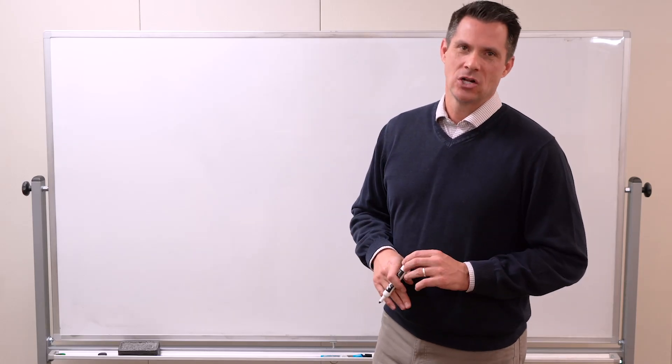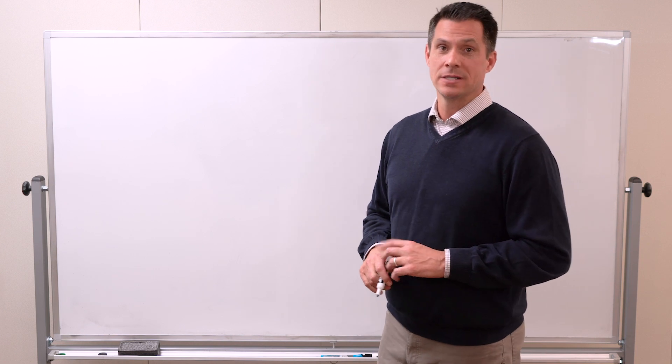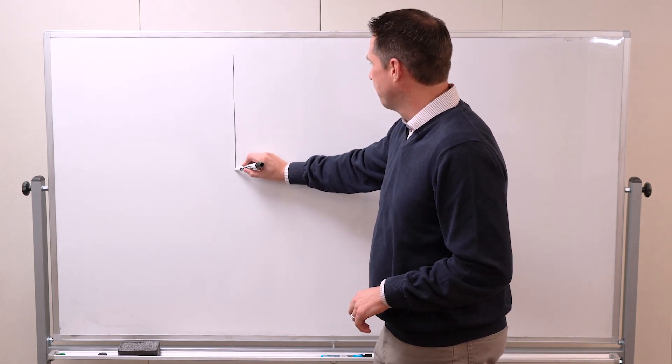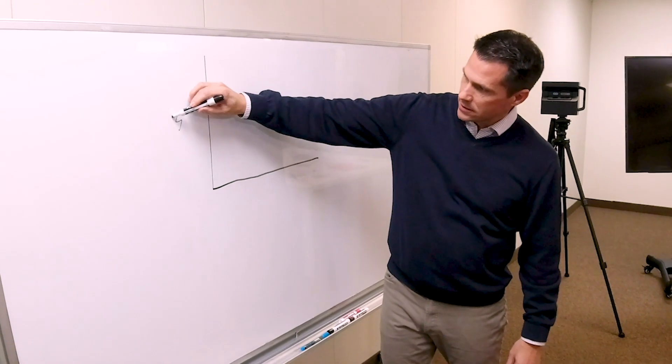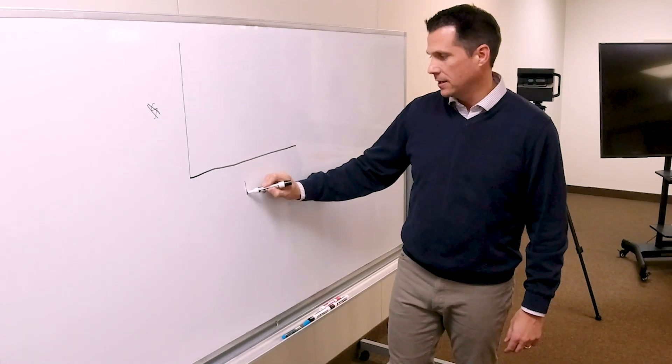Have you been on the fence about owning or renting? I want to show you a simple graph that can help you decide. I have this graph here—on this side I'm going to call this our payments, whether it's rent or mortgage. On this side here I'm going to call this time. We're going to measure time in years.